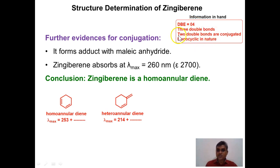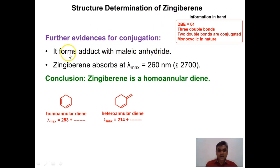For additional evidence of the two conjugated double bonds, zingiberene should participate in a Diels-Alder reaction. Indeed, zingiberene forms an adduct with maleic anhydride, clearly supporting the observation that two double bonds in zingiberene are conjugated.